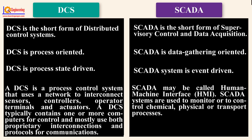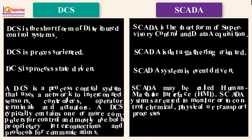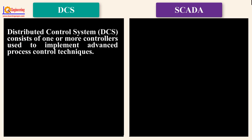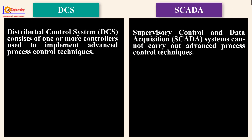SCADA systems are used to monitor or control chemical, physical, or transport processes. A distributed control system consists of one or more controllers used to implement advanced process control techniques. Supervisory Control and Data Acquisition, SCADA, systems cannot carry out advanced process control techniques.